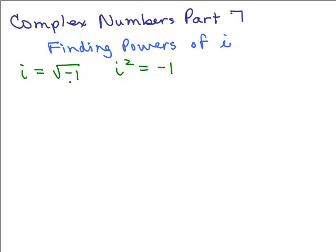We know that i is equal to the square root of negative 1, and we know that i squared is negative 1. From this, we could figure out i cubed, i to the 4th, i to the 5th, and so on.